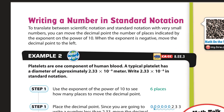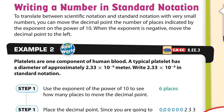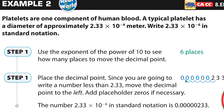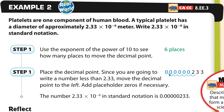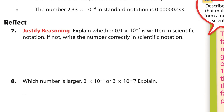Now we're going the other way — given scientific notation, we write it in standard notation. We have a number and we move the decimal to the left because we're going backwards. That's six places to the left: count one, two, three, four, five, six. Fill in the rest with zeros and there you go — that number written in standard notation.